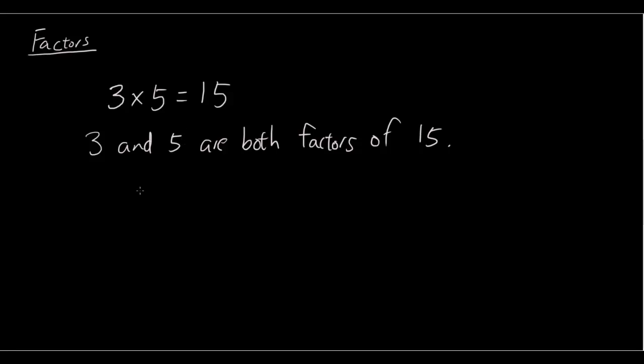So if you wanted to list all the factors for 15, then you have 1. 1 times 15 is 15. 2 won't go into 15. 3 times 5 is 15. 4, no. 5 times 3 is 15. And that's it. So the factors are 1, 3, 5, and 15.